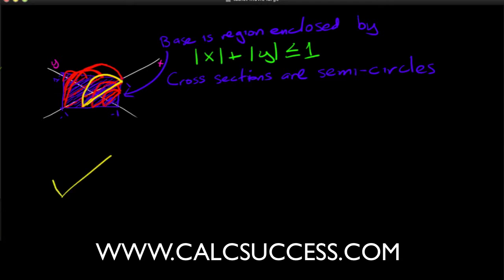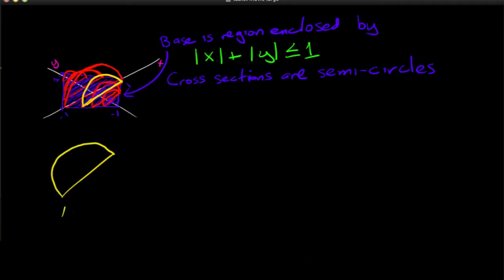So the area of this semi-circle, I'm going to call it ACS. So area of the cross section is one half pi r squared.